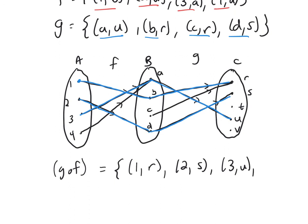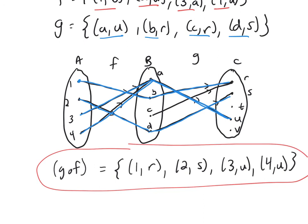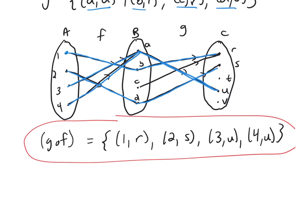And then finally, 4 goes to A, and A, we already said, goes to U. So 4 is going to go to U. And this is our composition function right here. So if you visualize these two functions right next to each other and follow from your elements of A over to your elements of C, it'll be really easy to write down the elements in this function in this set here.